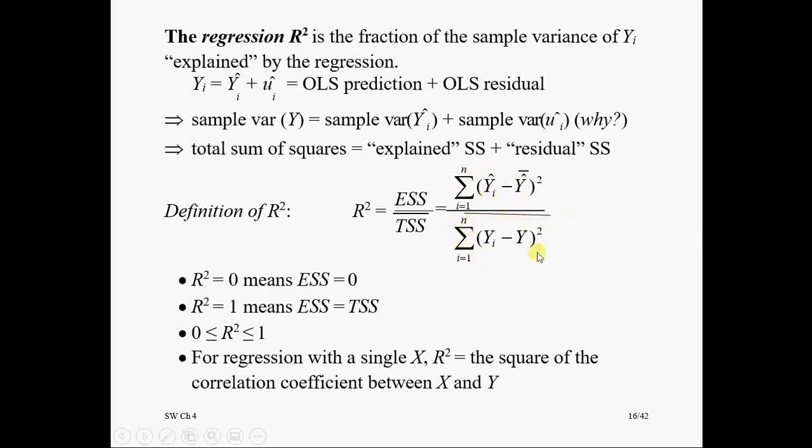Here you have Y bar. Please keep in mind this is always fixed. For example, we have 420 districts, this value will remain fixed. These values may change depending upon how many X variables, explanatory variables you have. So R-squared equals zero means explained sum of squares equals zero, means X has no predictive power.